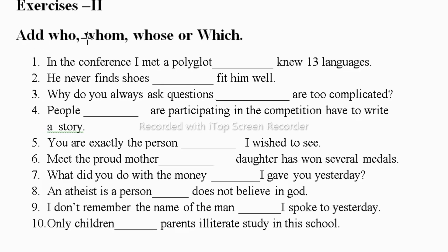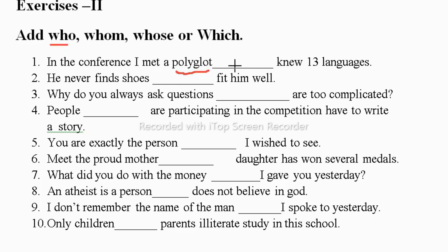Now let's see the second exercise. You need to fill the blanks with appropriate relative pronouns: either who, whom, whose or which. First sentence: In the conference I met a polyglot — blank — knew 13 languages. Here we are talking about a person, since polyglot means a person who knows many languages, and it is a subject position. That's why we take 'who'. We cannot take which, whose or whom here.